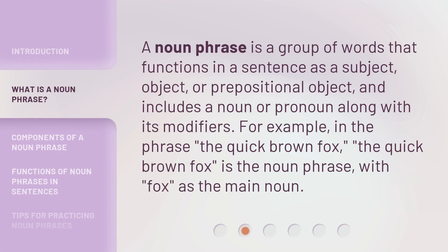A noun phrase is a group of words that functions in a sentence as a subject, object, or prepositional object, and includes a noun or pronoun along with its modifiers. For example, in the phrase 'the quick brown fox,' the quick brown fox is the noun phrase, with fox as the main noun.